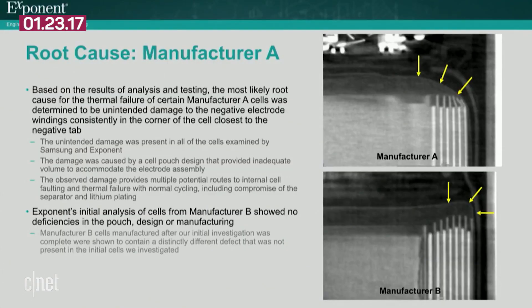In the CT images on the right side of this slide, there are arrows that point out the locations of the pouch. The top image is of a cell from manufacturer A. It can be seen that the curvature of the pouch causes it to come in contact with the negative electrodes, causing the electrodes to be bent over. In contrast, the bottom image is of a cell from manufacturer B, showing that the pouch extends well beyond the ends of the negative electrodes and provides enough room.